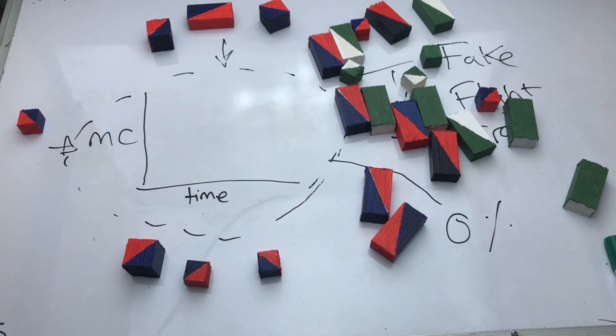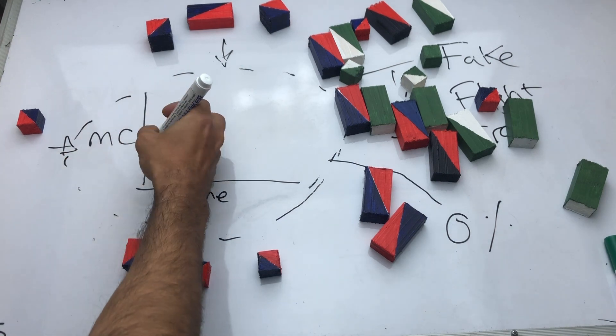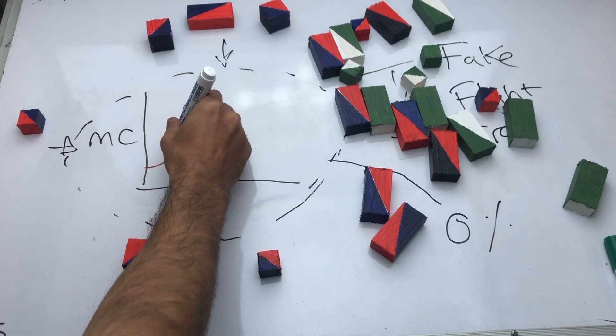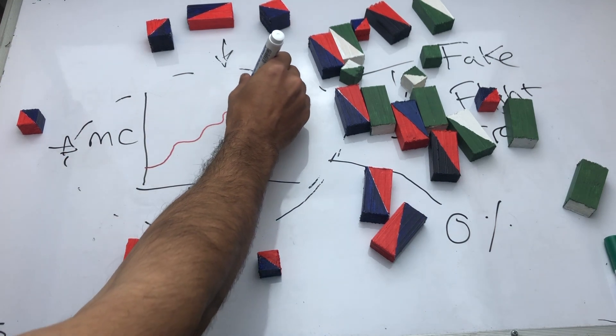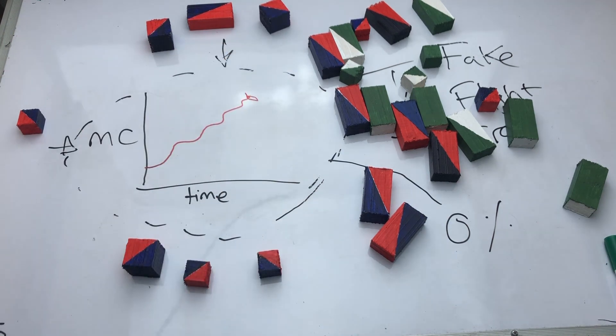Now let's consider for a second that the Hungarians stayed in their camp and they decided to fight to the last man. Well then, the Mongolians would have had to have spent a lot of effort. A lot of men and resources in digging them out, creating a graph that maybe looks like this.